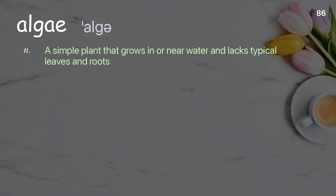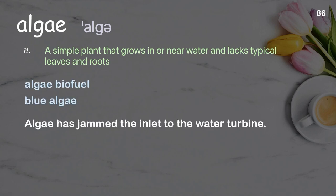Algae. A simple plant that grows in or near water and lacks typical leaves and roots. Examples: algae biofuel, blue algae. Sentence: Algae has jammed the inlet to the water turbine.